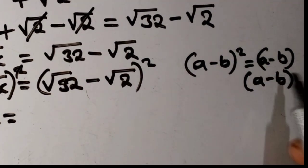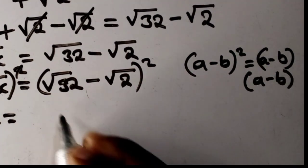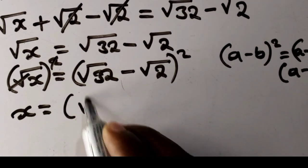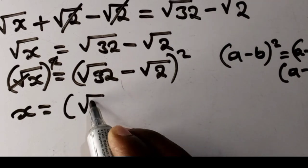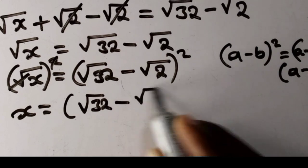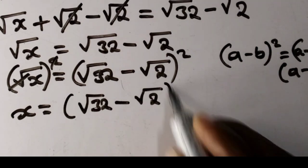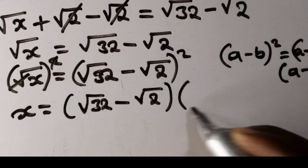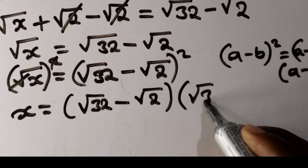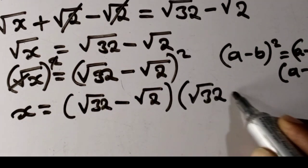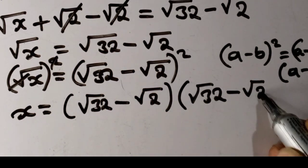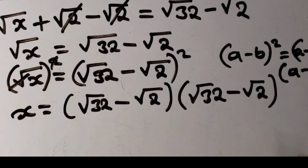Expanding a minus b squared as a minus b multiplied by a minus b, we open the bracket: root 32 minus root 2, multiplied by root 32 minus root 2.